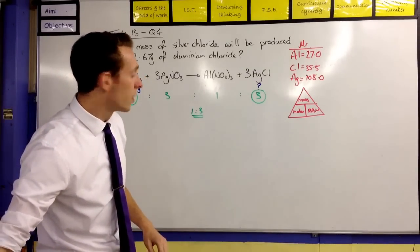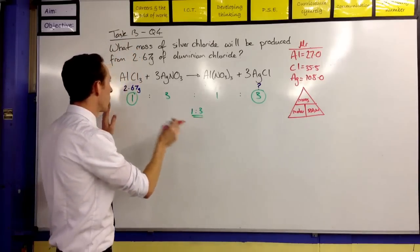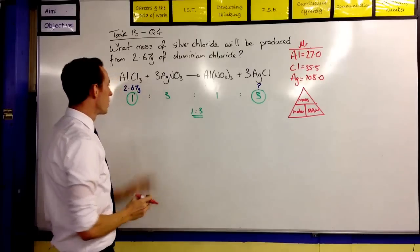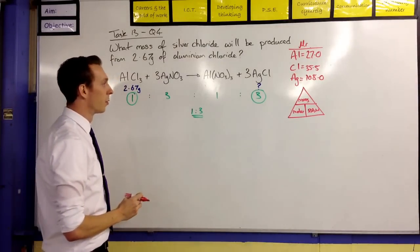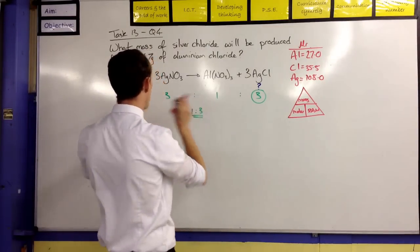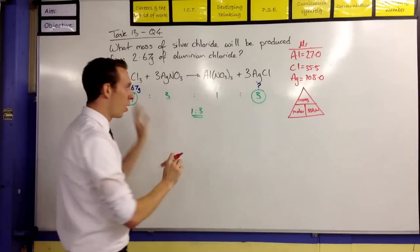So, first step then, we need to work with what we've got. So we know we've got 2.67 grams of aluminium chloride. So we're going to work out what moles we have then, okay, of this.